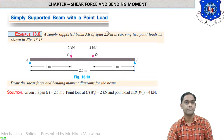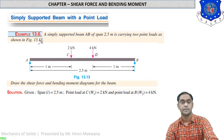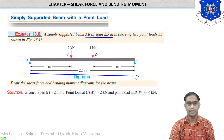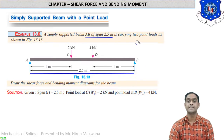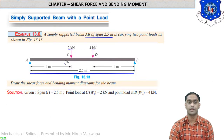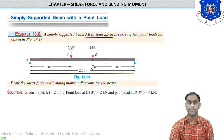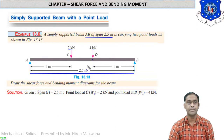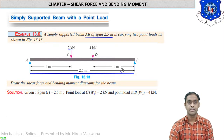The simply supported beam AB has a span of 2.5 meters and is carrying two point loads as shown in the figure. The first point load is 2 kN and the second is 4 kN, acting at points C and D respectively. Point C is at 1 meter from the left side while point D is at 1 meter from the right side, so the gap between C and D is 0.5 meter. We have to draw shear force and bending moment diagrams for this beam.